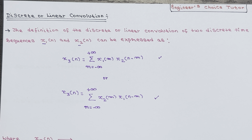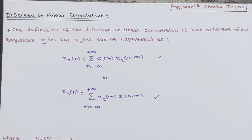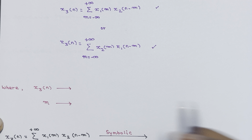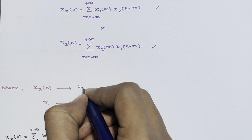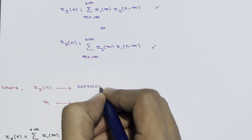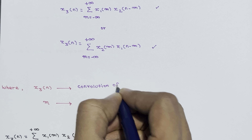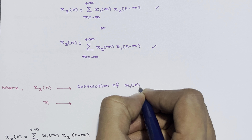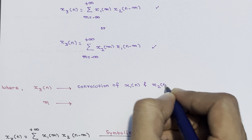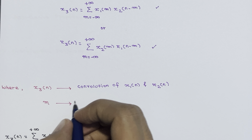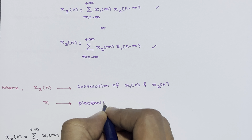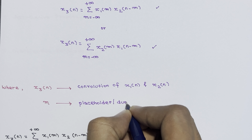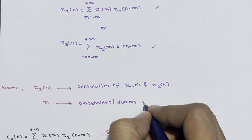x3(n) is a sequence derived from the convolution of x1(n) and x2(n). The variable m serves as a placeholder — it is a dummy variable in the convolution summation.